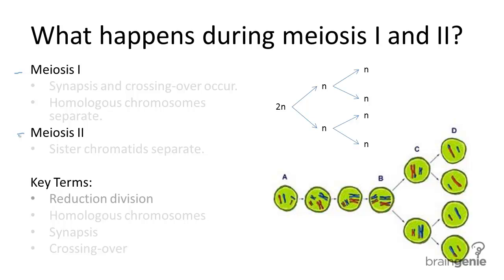Meiosis I is also called reduction division. Before it occurs, a cell undergoes the same DNA replication process as in mitosis. So when cells begin meiotic cell division, there are two sister chromatids per chromosome.